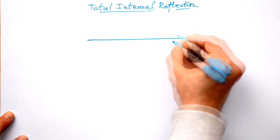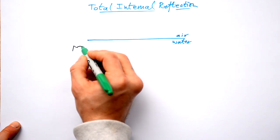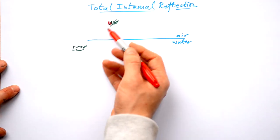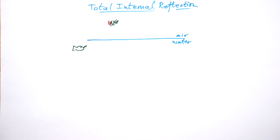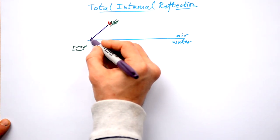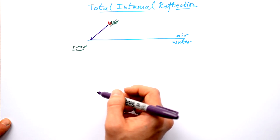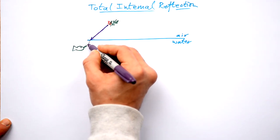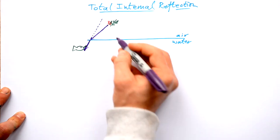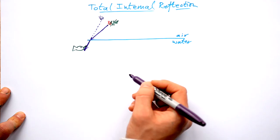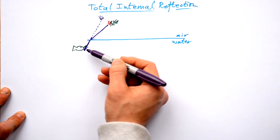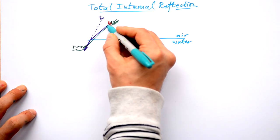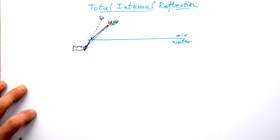Let's say we have some water here and air above. If you were a fish and there's a little bug above the surface and you want to spit water to hit it — when light from the bug hits the water, it's going into a more optically dense medium, so it bends towards the normal. The fish sees the bug in a different apparent position because eyes assume light travels in a straight line. Remarkably, these fish can compensate for refraction and know exactly where to shoot.